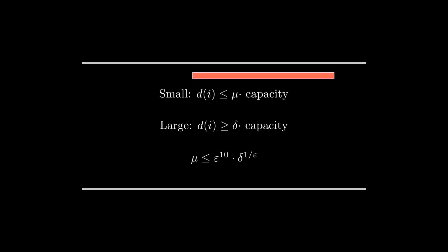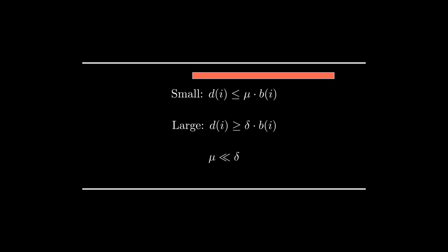The key difficulty for solving SAP comes from the distinction of small tasks and large tasks. Intuitively, small tasks have a small demand — a small task can be very long but still small because the demand is small; if the demand is large, then we have a large task. Formally, small means the demand of task i is smaller or equal to mu times the capacity, and large means the demand is greater or equal to delta times the capacity, where mu and delta are two constants far apart from each other. For tasks between mu and delta, there is a random shift argument such that we can remove those tasks.